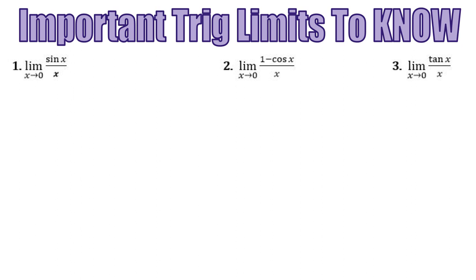We're going to start by identifying three trig limits that you should know. We will actually prove the third one is true in the next part of this video, but I'm going to tell you these so that you can get them written down and use them as fact. First limit: the limit as x approaches 0 of sine of x over x is equal to 1. This is something that you should know.